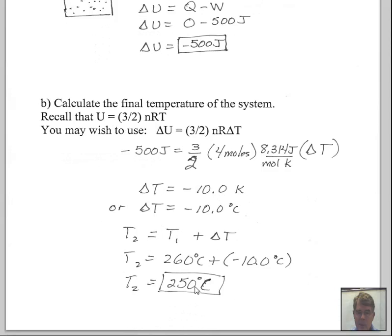We were given the original temperature as 260 degrees Celsius. So I'm going to stay on the Celsius scale. We put in temperature one of 260, we add the change of temperature of minus 10, and we come up with a final temperature of 250 degrees Celsius.